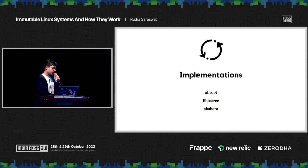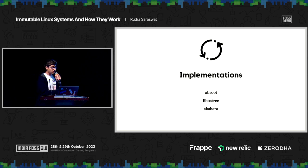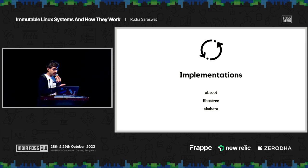AB root uses two partitions: an A root partition and a B partition, as the name tells. Any updates you run or take on manually run in the B partition. If an update was successful in the B partition, the B partition is merged with the A partition on the next boot, and that is how atomicity is implemented in AB root.